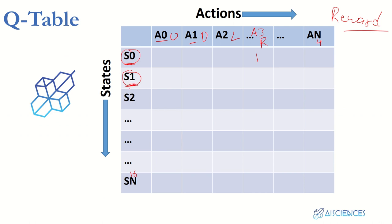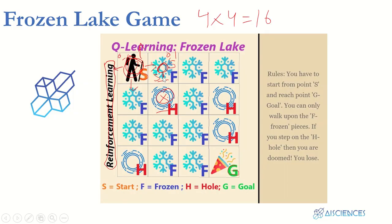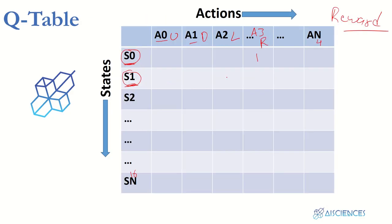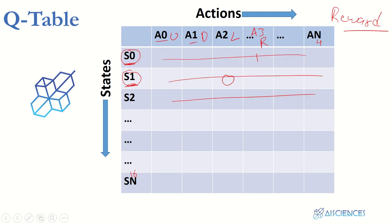So if the agent goes right it arrives at state s1. From state s1, if it goes down into a hole it gets zero reward. By doing a lot of experimentation, this whole table will be filled with values. There will come a time when we can choose: at s0, which is the best action? If values are like 10 and 20, we pick 20 — the maximum reward value.